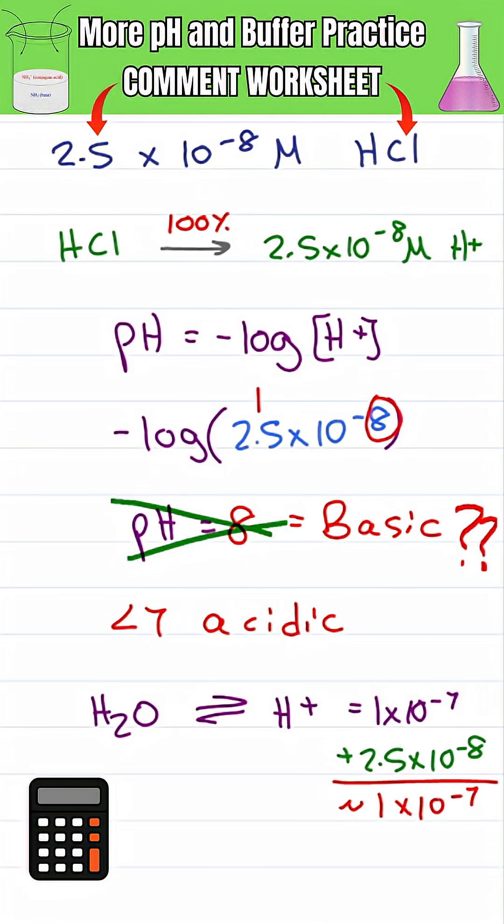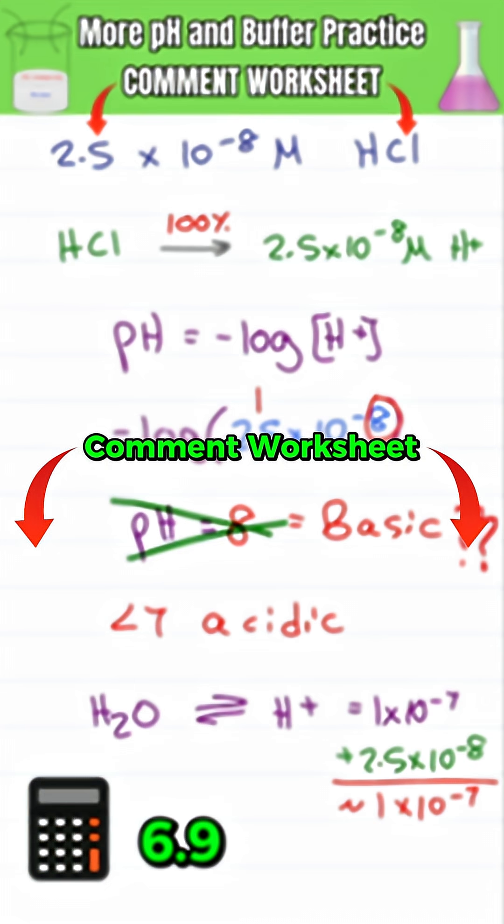In fact, calculator says 6.9 which is close enough. Comment worksheet below for even more practice on pH and buffers without a calculator.